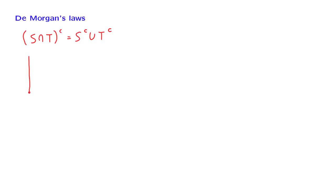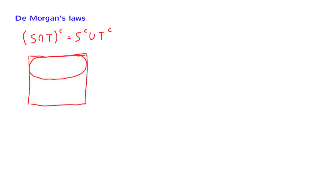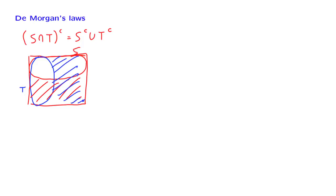Pictorially, here is the situation. We have our universal set, and inside that set we have a set S and another set T. The complement of S is this part of the diagram. The complement of T is this part of the diagram. What is left is just this region here, which is the intersection of S with T. So anything that does not belong here belongs to the intersection, and this means that the complement of the intersection is everything out there, which is this set.